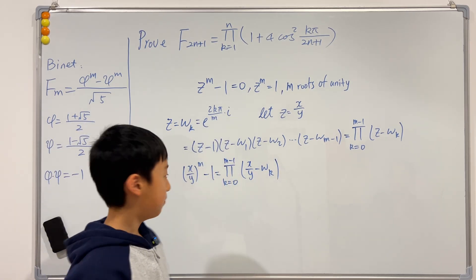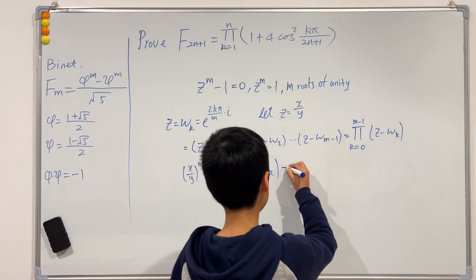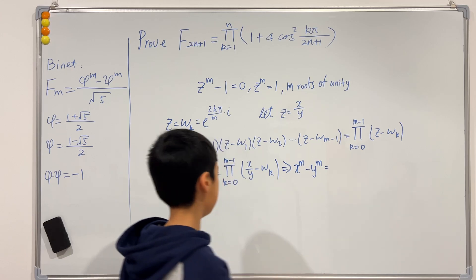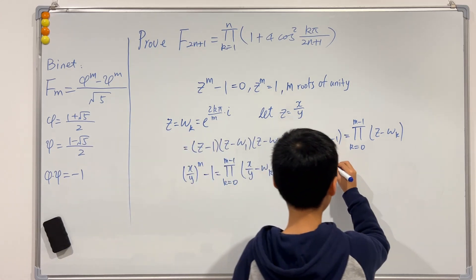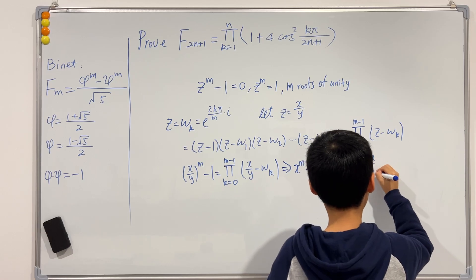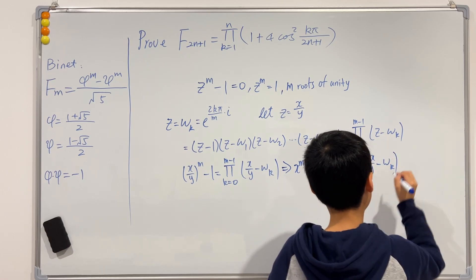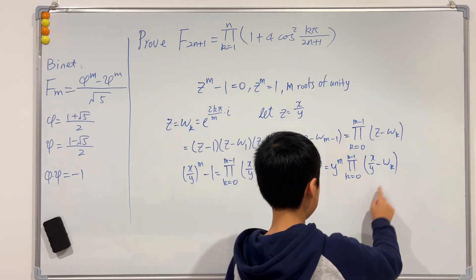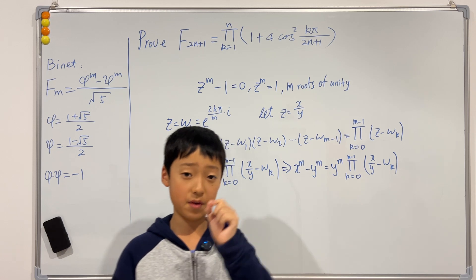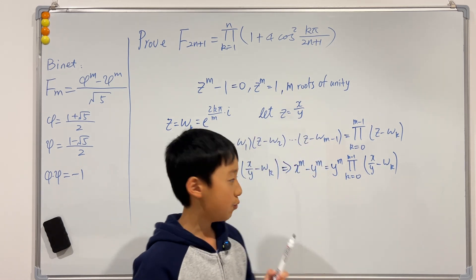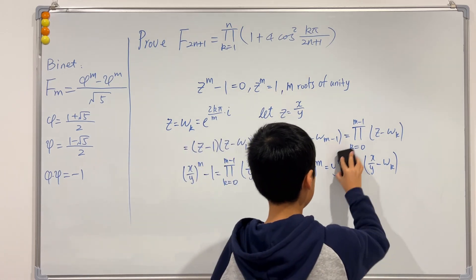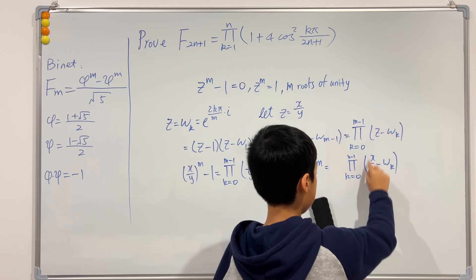Now I'm going to multiply both sides by y^m. Unpacking the left side gives x^m − y^m. On the right side, we first factor out y^m, then multiply it into each term of the product. Since the product has m terms, we multiply y^1 inside each bracket, giving (x − y·ω_k) for each factor.